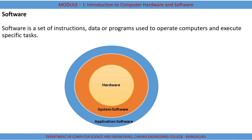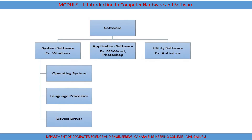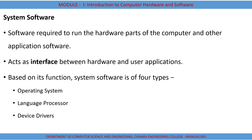The types of software — there are three basic types. The first is system software, the second is application software, and the third is utility software. Under system software, we come across operating system, language processors, and device drivers. First, we will see what exactly is system software.